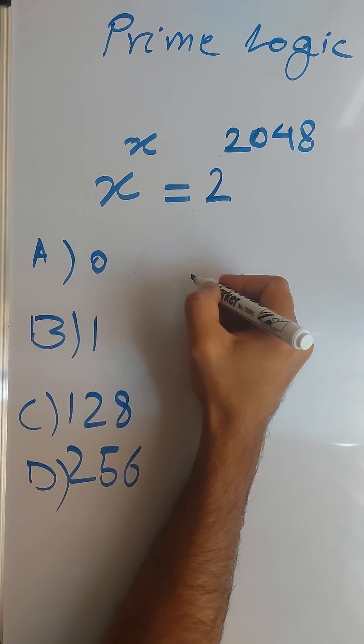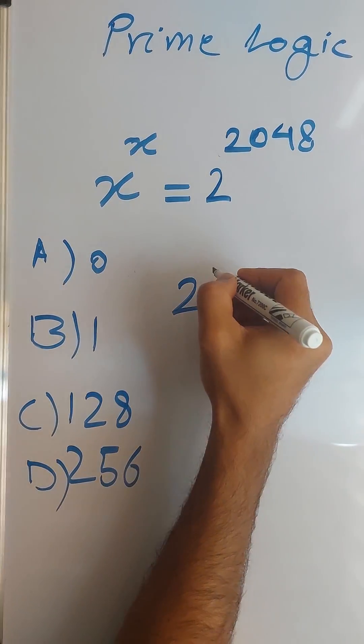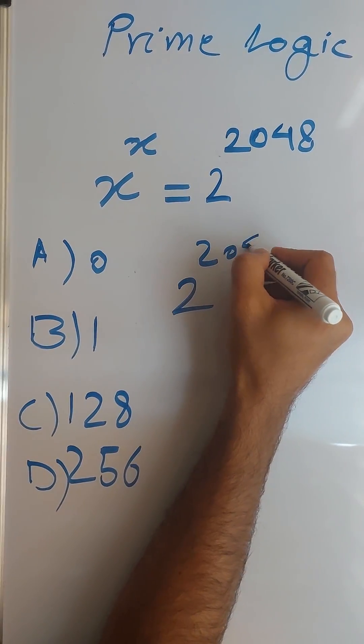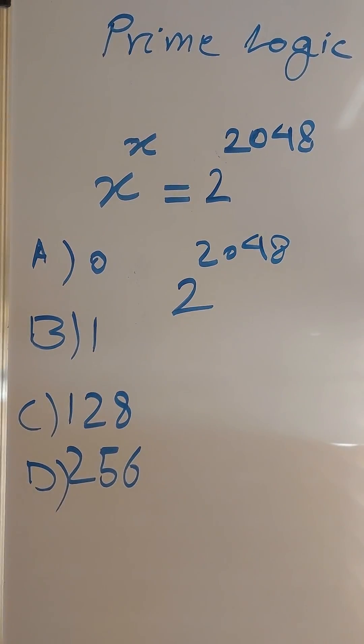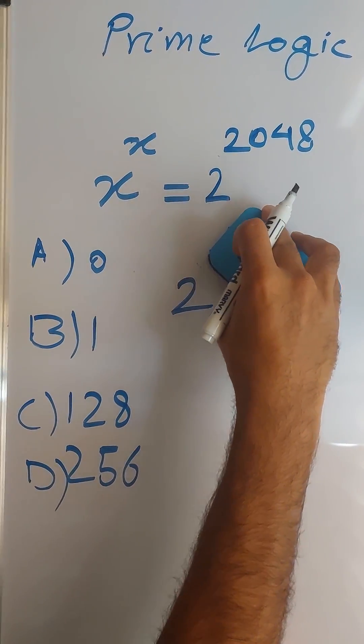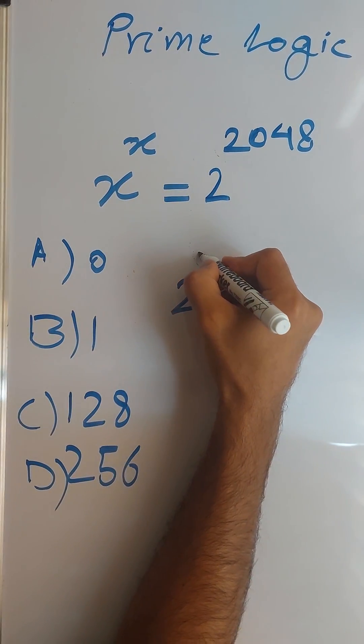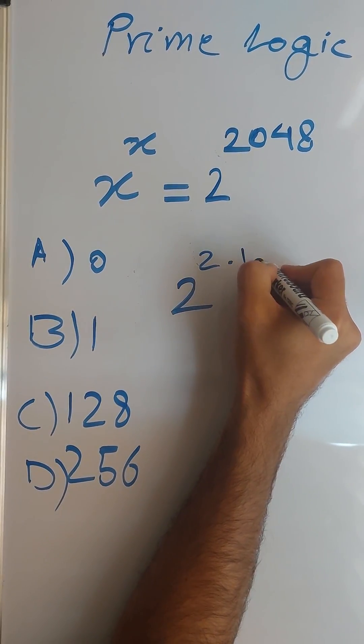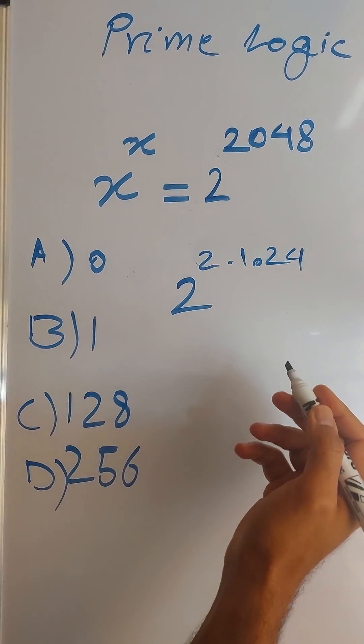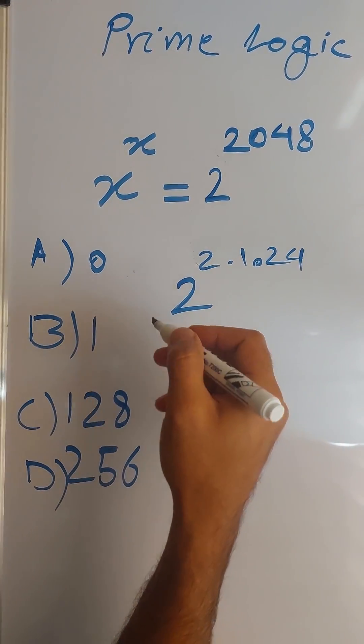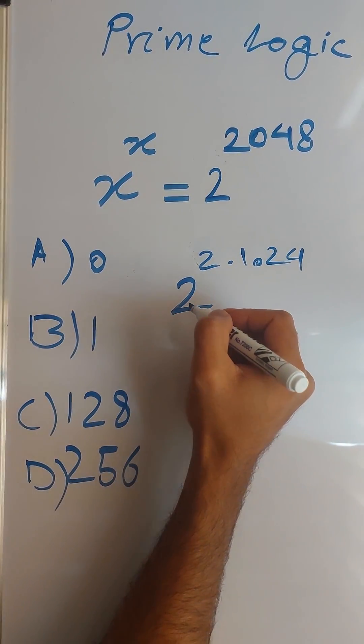So 2 to the power of 2048, we can write it as the same thing as 2 times 1024. Because of the property of exponents, we can say it equals 4 to the power of 1024.